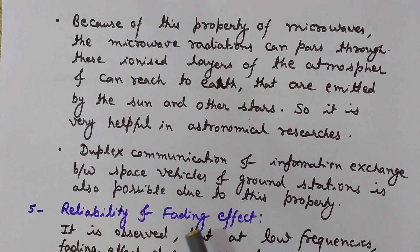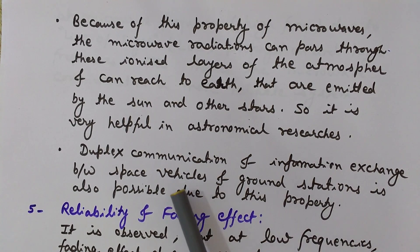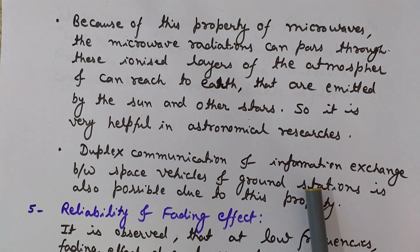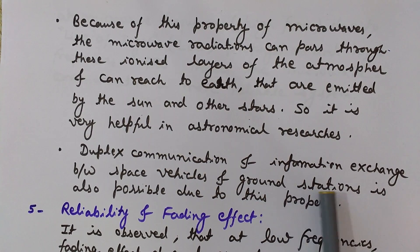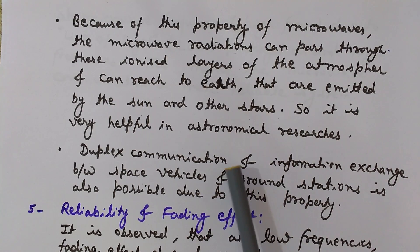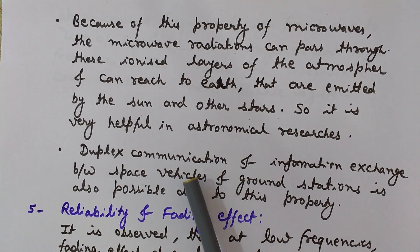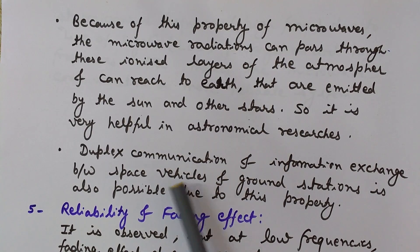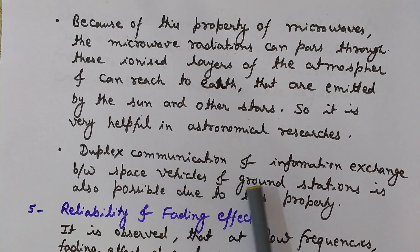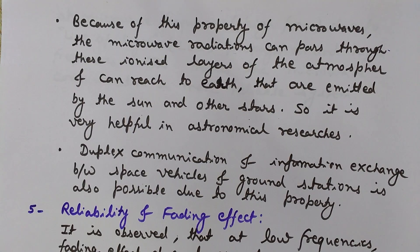This property is also useful in duplex communication and information exchange between space vehicles and ground stations. Because of this property, ground stations and earth stations can have good communication even though the ionized layer lies between them. Space vehicles and ground stations can use microwaves to communicate with each other, as the ionized layer acts as a transparent layer to microwaves.